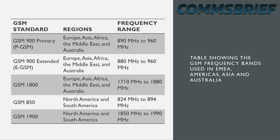Now let's have a look at this table on your screen. What we're seeing here are three columns. The first one is a list of all the frequency bands. The second one shows the regions or areas within which these frequencies are used. And the last one shows the exact range of the frequencies being used. The first band is the primary 900 band — this is the original band that was first defined for GSM. It ranges from 890 MHz to 960 MHz and is used in Europe, Asia, Africa, Middle East and Australia.